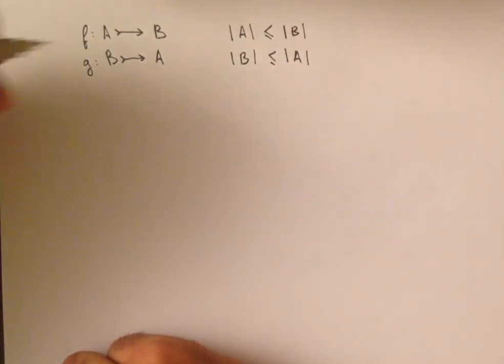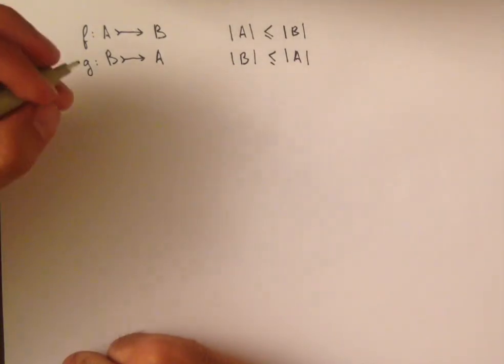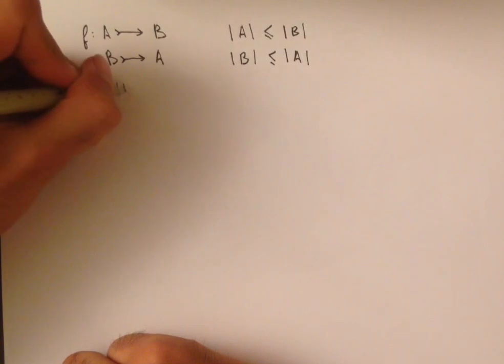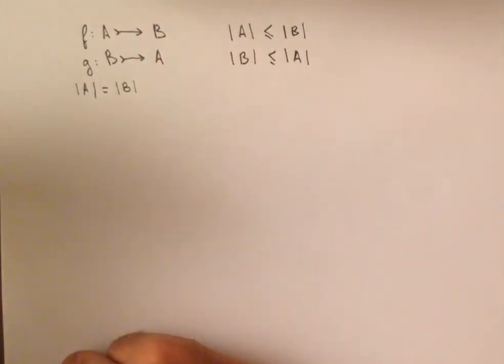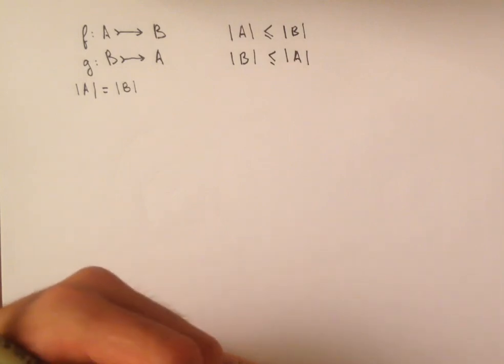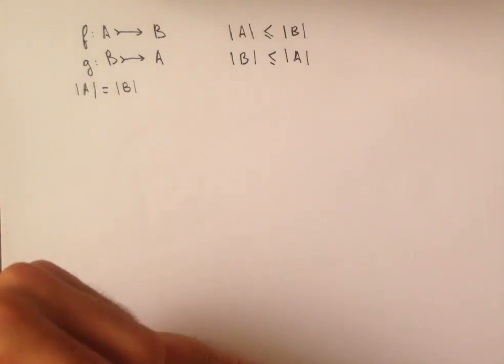And so it would make sense to conclude that if we have both these injections F and G, then the cardinality of A is equal to the cardinality of B, since we are using these less than or equal to symbols. But it's important to remember that we started using these less than or equal to symbols based on our intuitions about how these injections relate to the sizes of these sets. And so there's no reason for this to actually hold up. And because we've had some bad experiences with our intuitions in the past, it's important to make sure that this actually does follow from the axioms.